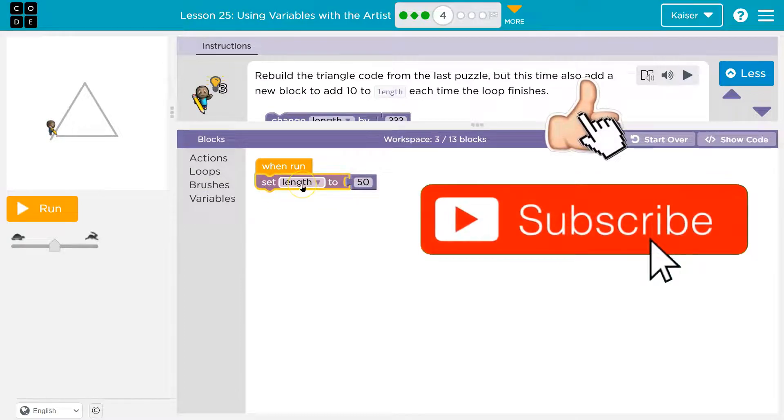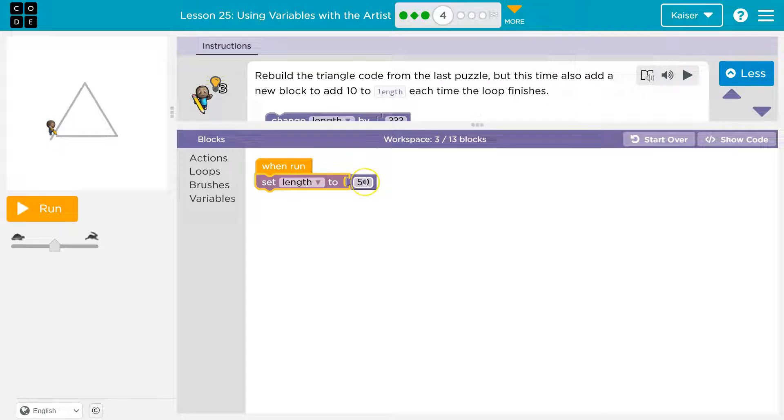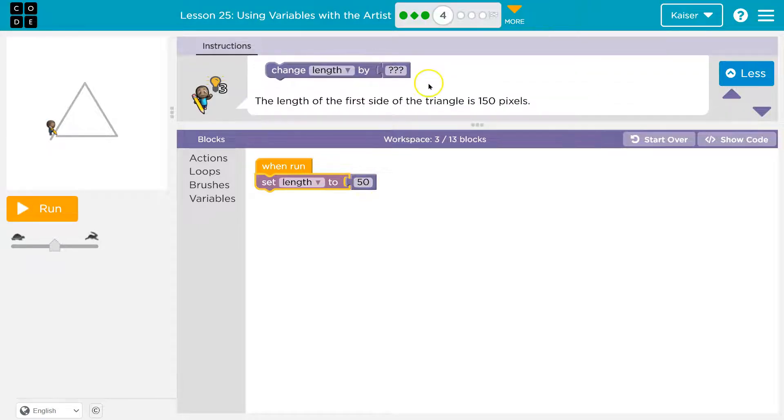Now what I'm doing here is using the word length to represent a number. And if we're using the code from the last puzzle, good, it tells us again, the length of the first side of the triangle is 150.